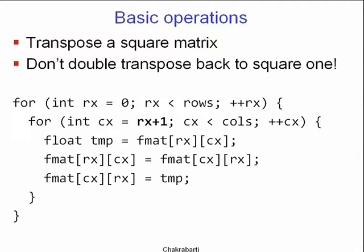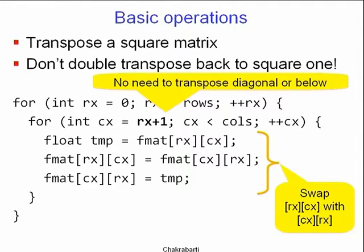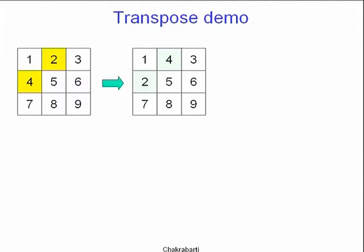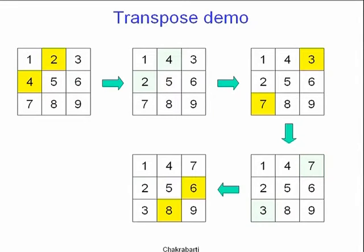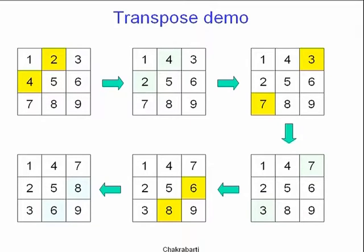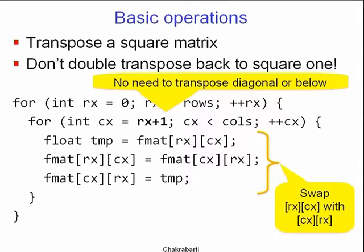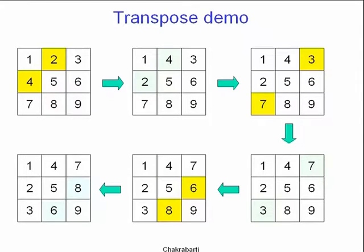How do you transpose a square matrix? The idea is to not double-transpose, so don't go below the diagonal. Stay above the diagonal and interchange two elements across the diagonal at a time. In the 3×3 array, you interchange cells 2 and 4, then 3 and 7, then 6 and 8. You only look at above-diagonal elements and swap them with their mirror images: the mirror image of cell Rx,Cx is cell Cx,Rx. There's no need to swap anything on the diagonal itself, hence the strict +1.